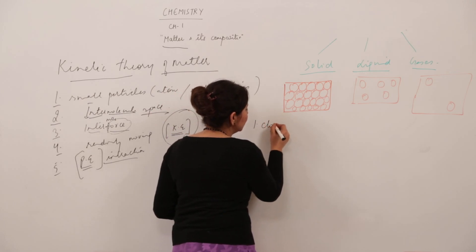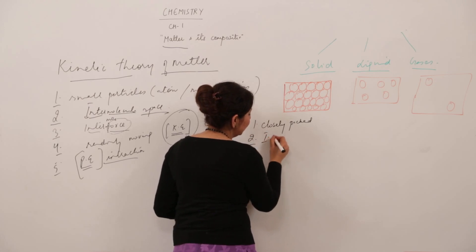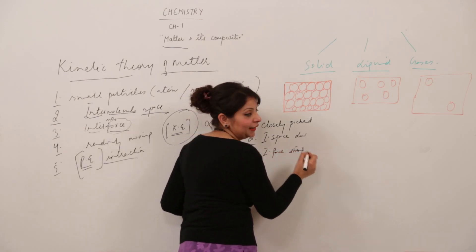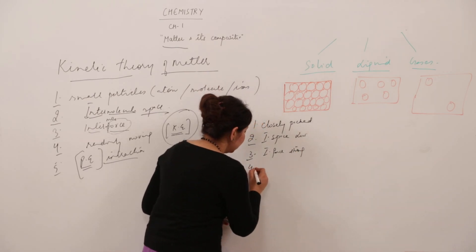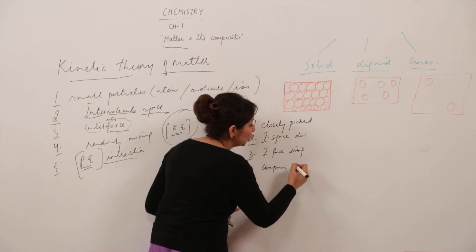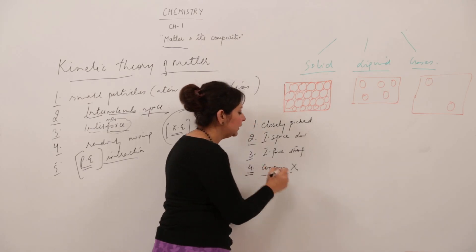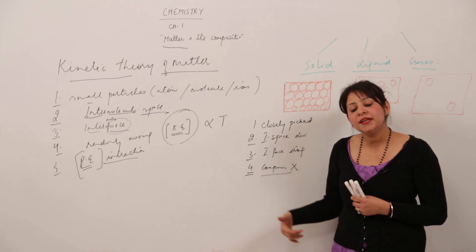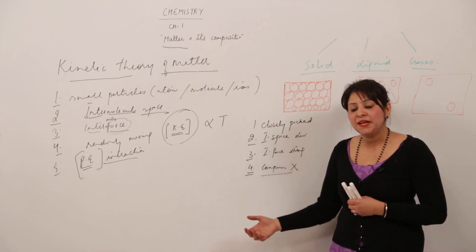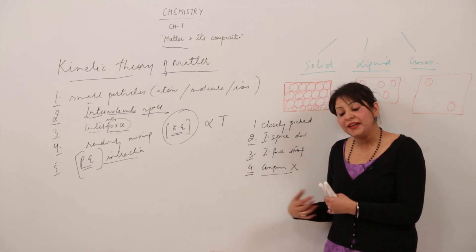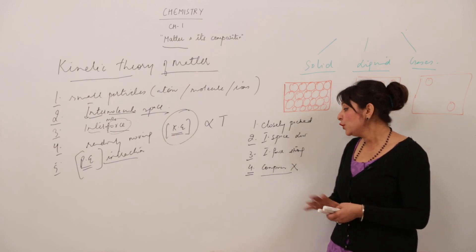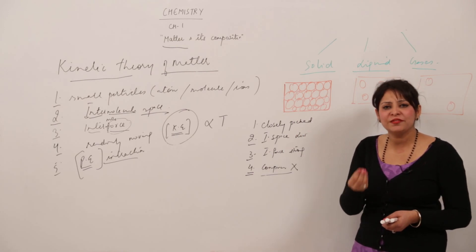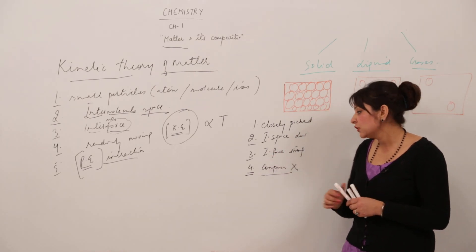In solid, the particles are closely packed, so the intermolecular space is low. The force is strong — that is why they tend to exist together. As for compressibility, they are not compressible at all. To compress a substance, there should be space between atoms so they can be pushed closer; since solids have very little or no space, you cannot make the atoms more closer, so they are not compressible.